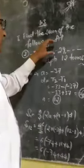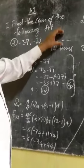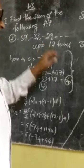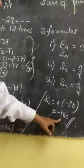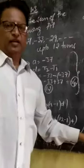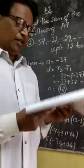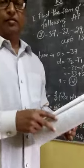So, the sum of minus 37 minus 33 minus 29 up to 12 terms is here minus 180. Understood all of you? Okay. Bye. In our next class, let us solve the other sums. Okay. Bye.